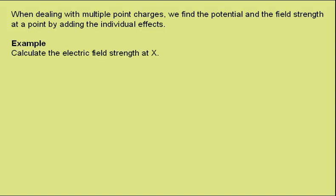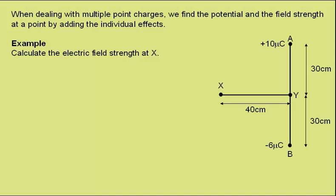Here we have an example to calculate the electric field strength at point X, given this diagram, where we have a 10 microcoulomb charge at point A, which is 30 centimetres from point Y, a minus 6 microcoulomb charge at point B, also 30 centimetres from Y, and point X is 40 centimetres from Y, as shown.